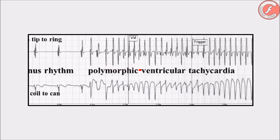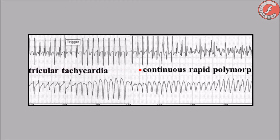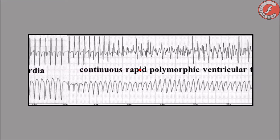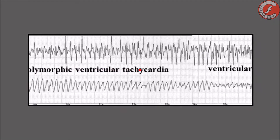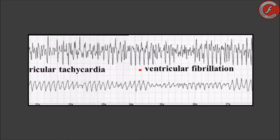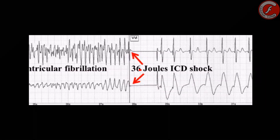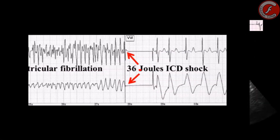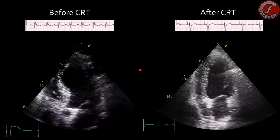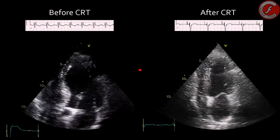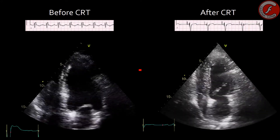Besides, some authors suggest that the longitudinal strain can help identify patients that can benefit from a defibrillator or other cardiac implantable devices, because it can not only help to estimate the risk of sudden death in patients with non-ischemic dilated cardiomyopathy and severe ventricular dysfunction, but it can also identify patients that can benefit from cardiac resynchronization when there is not the typical pattern of complete left bundle branch block.